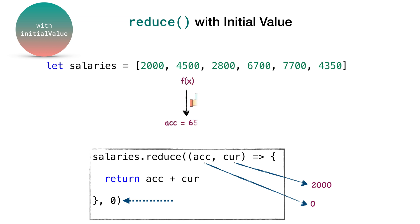And from here onwards, accumulator starts accumulating the returned values for further executions. Finally, after traversing all the elements inside salaries array, an output of 28,050 is returned. So this is the major difference in the usage of reduce method with or without an initial value.